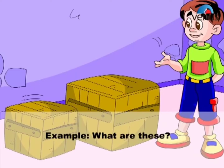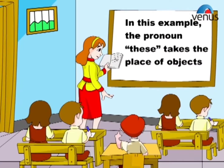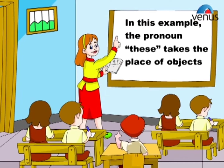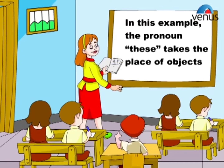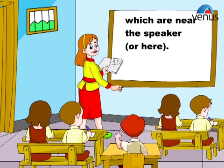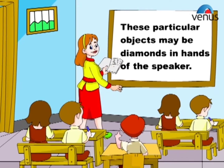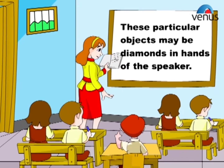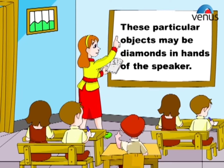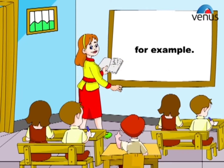What are these? In this example, the pronoun 'these' takes the place of objects which are near the speaker, or here. These particular objects may be diamonds in the hands of the speaker, for example.